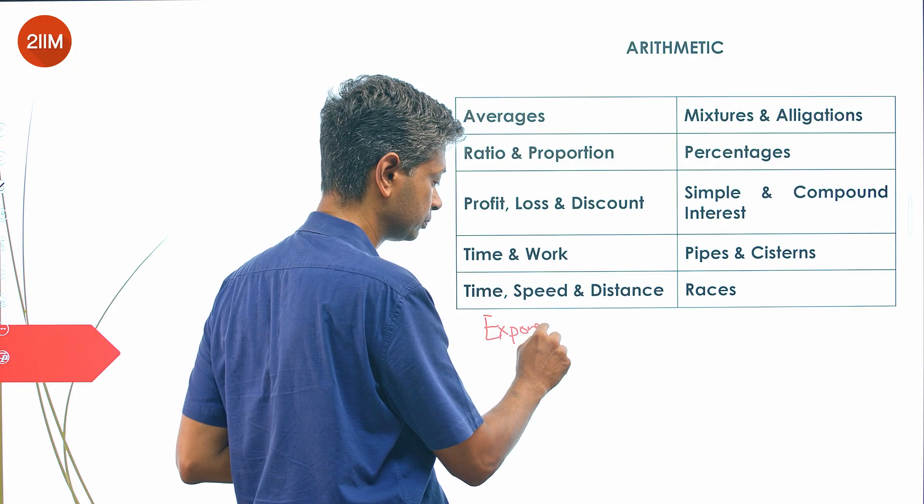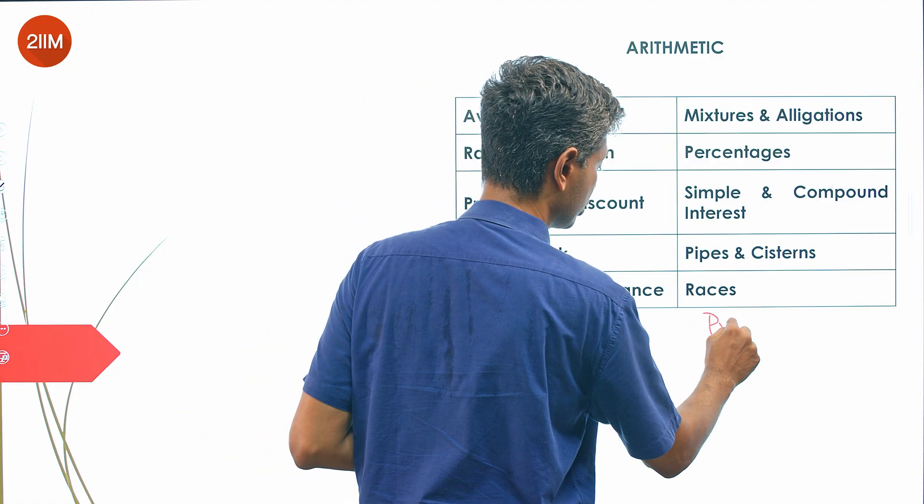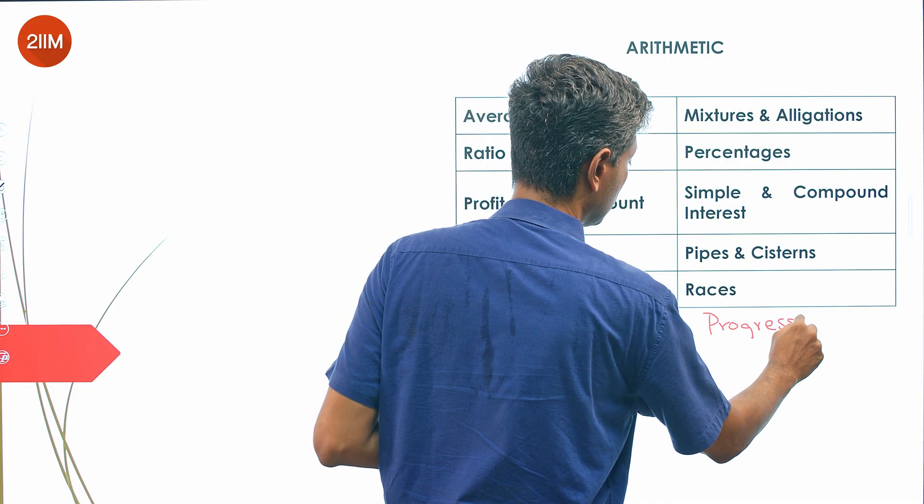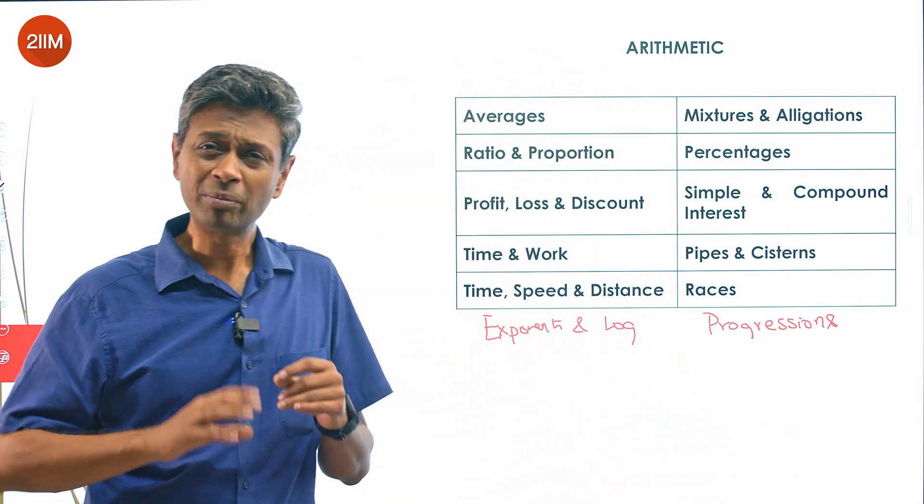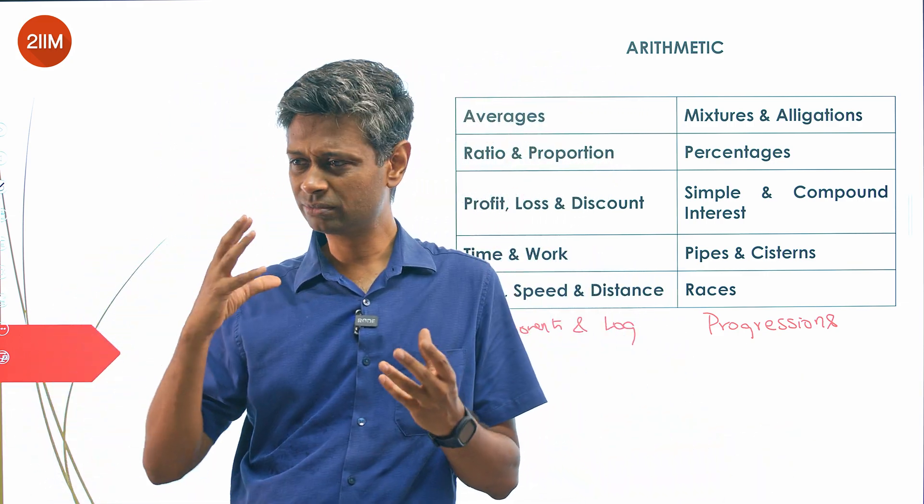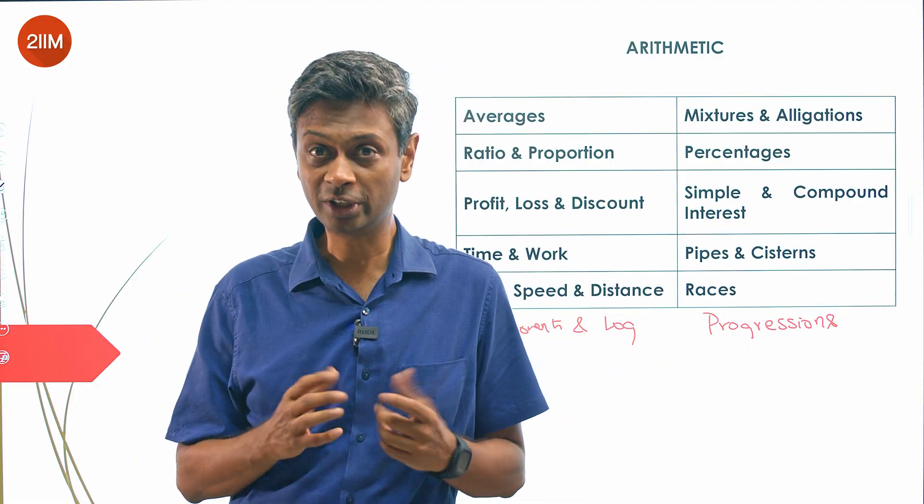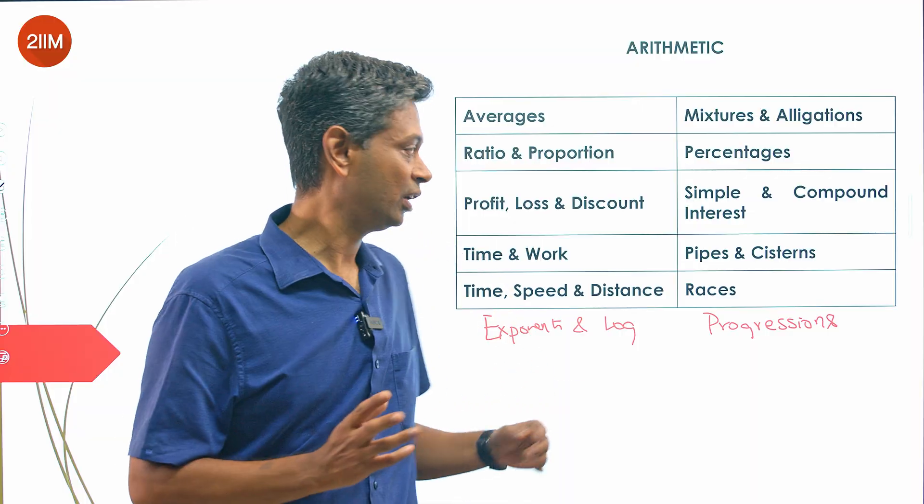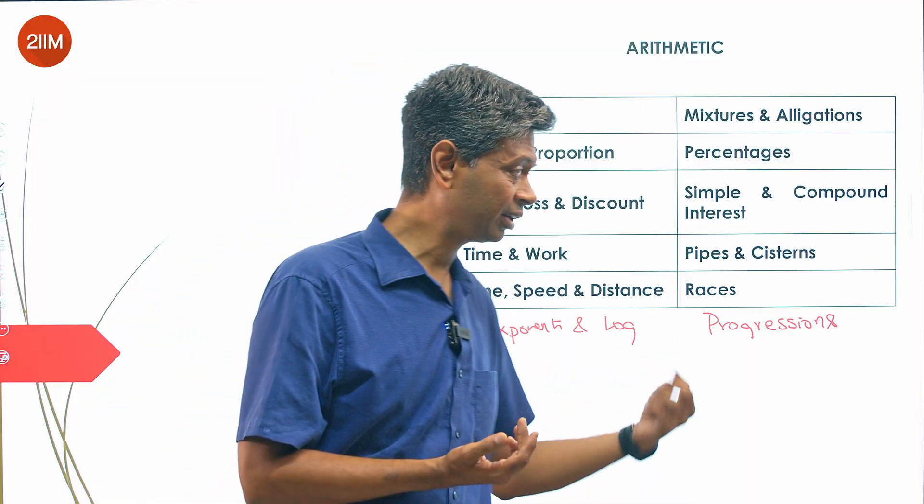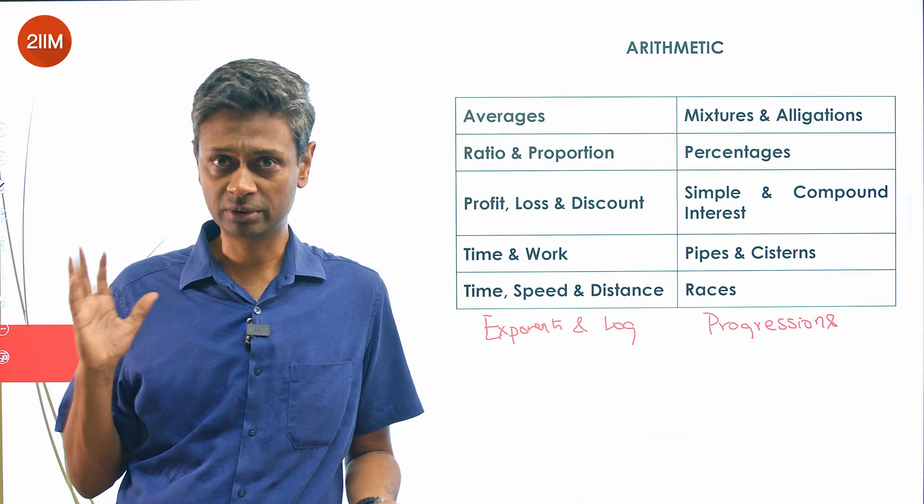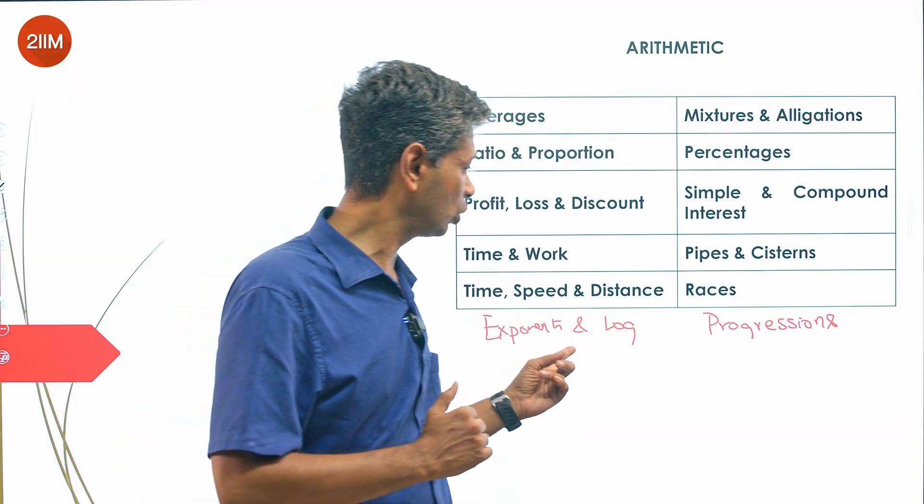We talk about what is classically defined as aptitude, and within that sits all of these. Beyond this, there are two topics that sit here: exponents and logarithms, and progressions. I have not put them here explicitly because they can be classified as arithmetic or algebra. Progressions - you're talking about a plus n minus 1 times d, lots of variables. Logarithms - log x to the base y, lots of variables.